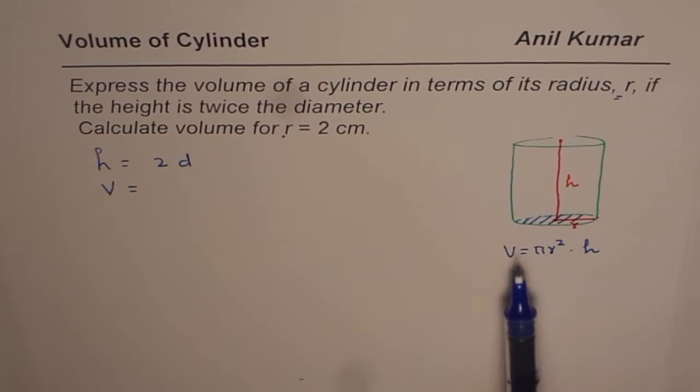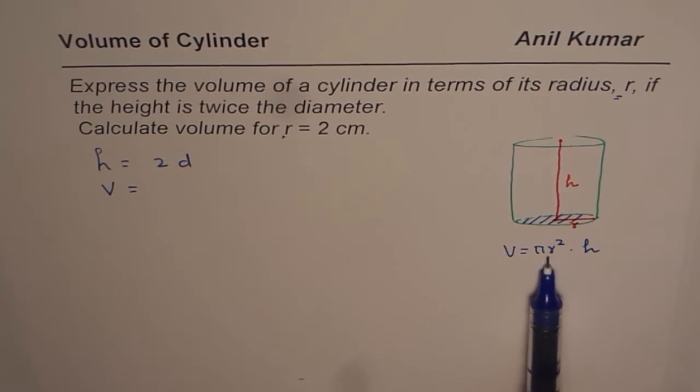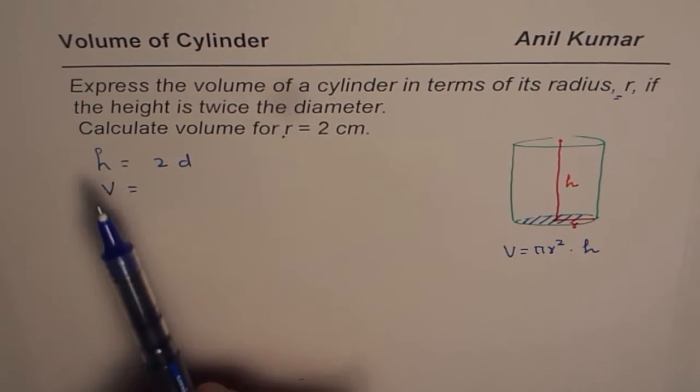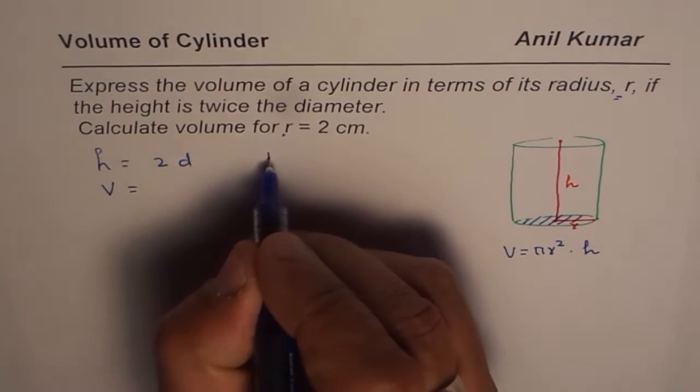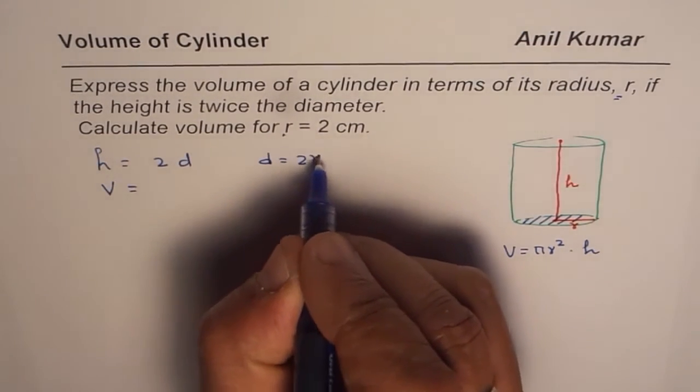Now the question is, we have to write this formula in terms of radius r. Here we have two variables. We have to somehow find a relation between r and height and use only one of them. We are given height equals to 2 times diameter. Now diameter, you know, is 2 times radius.